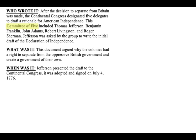Thomas Jefferson was asked by the group to write the initial draft of the Declaration of Independence because of his impressive writing style. These five individuals got into a room in Philadelphia to come up with a rationale for independence. The Declaration of Independence was simply a document that argued why the colonies had a right to separate from the oppressive British government and create their own government. Jefferson presented the draft to the Continental Congress and it was adopted and signed on July 4th, 1776 — hence why we celebrate July 4th as Independence Day.